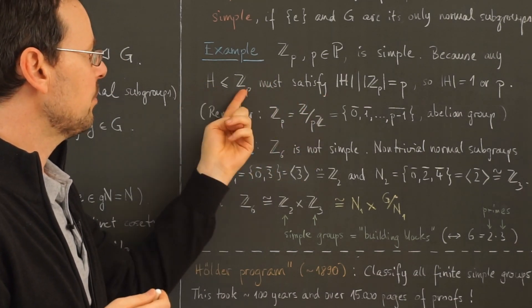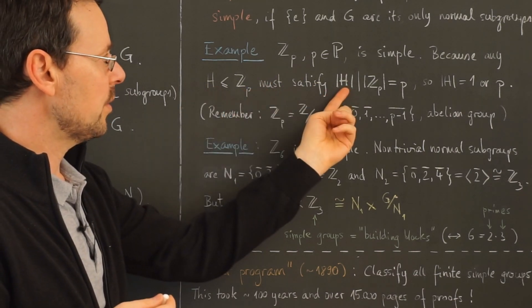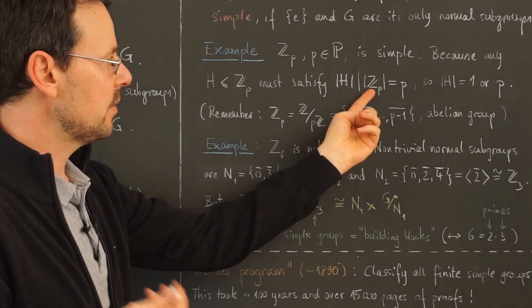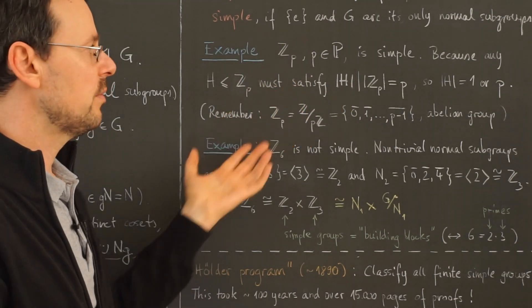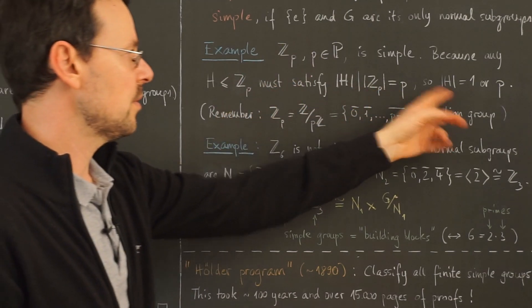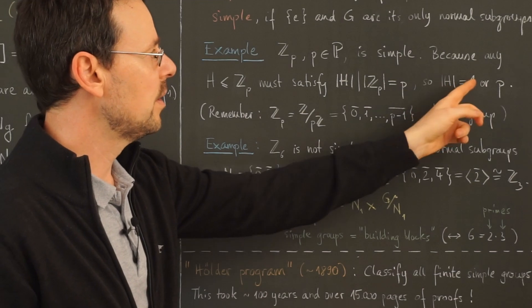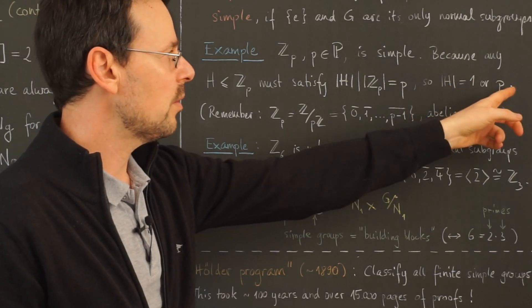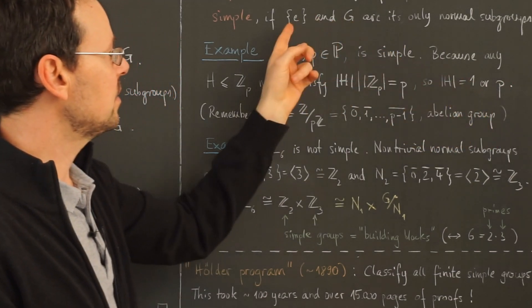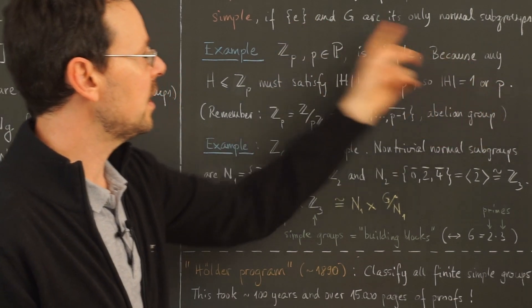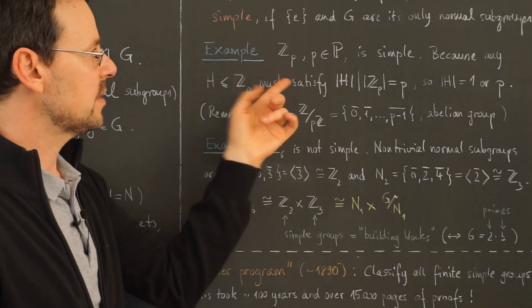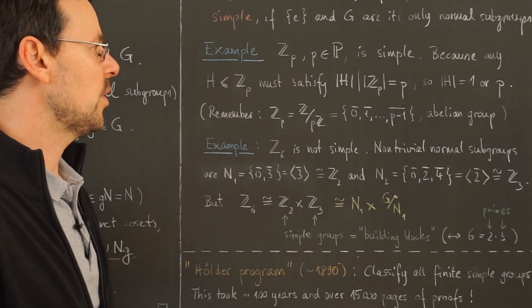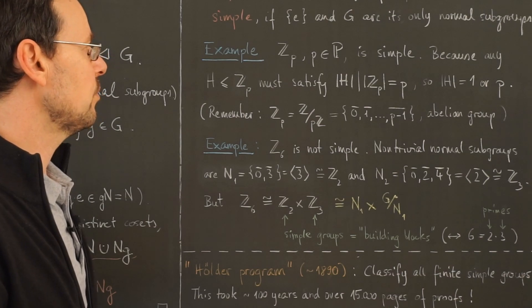Because if I have a subgroup of this group, its order must always divide the order of the group itself, which in this case is a prime number. But there are no non-trivial divisors of a prime. So from this it follows that either the order of h is 1 or it is p. In this case it is the trivial subgroup and in this case it is the whole group. This shows that this group has no non-trivial subgroups and hence no non-trivial normal subgroups.